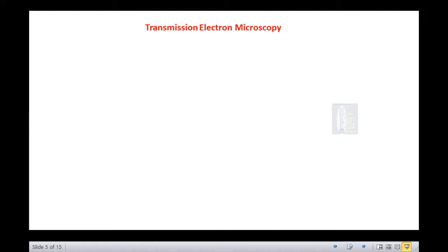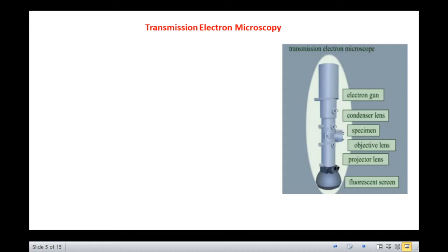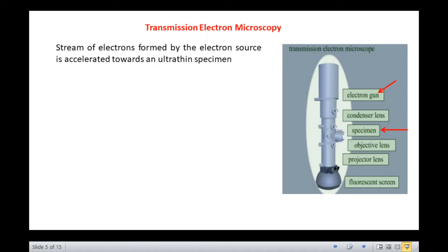Let us first have an overview of what exactly happens in a transmission electron microscope. A stream of electrons formed by the electron source is accelerated towards an ultra-thin specimen. This stream is confined and focused using metal apertures and magnetic lenses into a thin, concentrated, monochromatic beam. This beam is focused onto the sample using a magnetic lens.